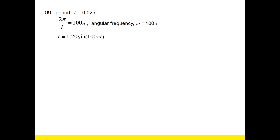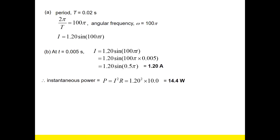Looking at the wave, you can see the period is 0.01 seconds. That means you can substitute in to find the angular frequency to be 100π. Substituting into the equation, and knowing the peak value is 1.2, the general equation I = I₀ sin(ωt) becomes I = 1.2 sin(100πt). This is actually the hardest part — parts B, C, D are just plugging in numbers, which I believe you can all do very well.